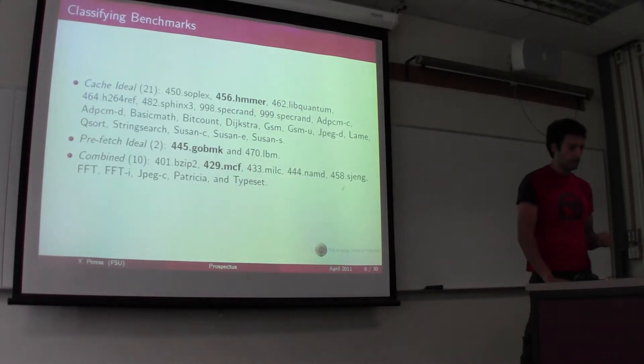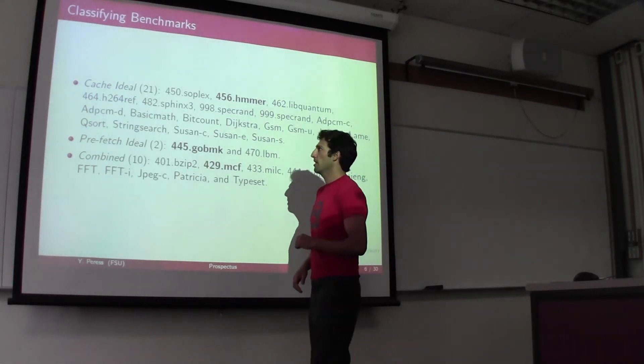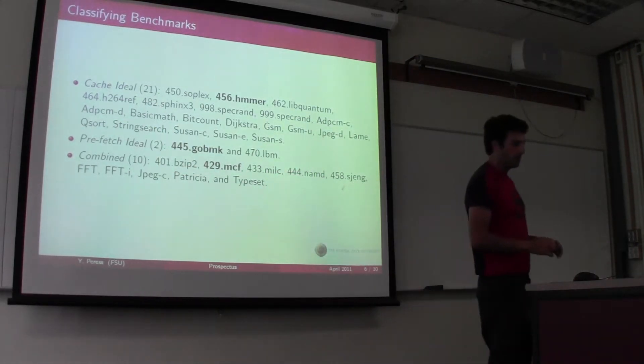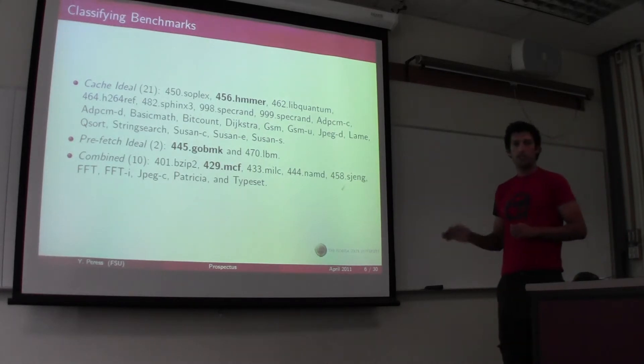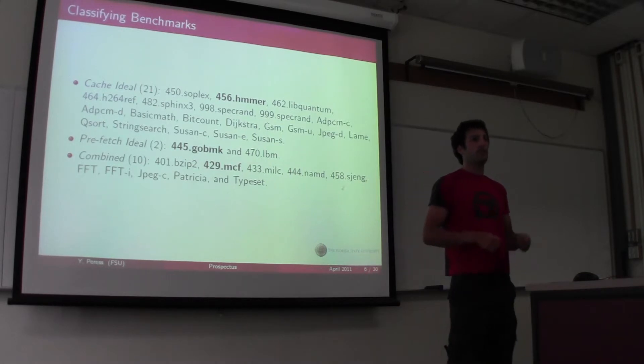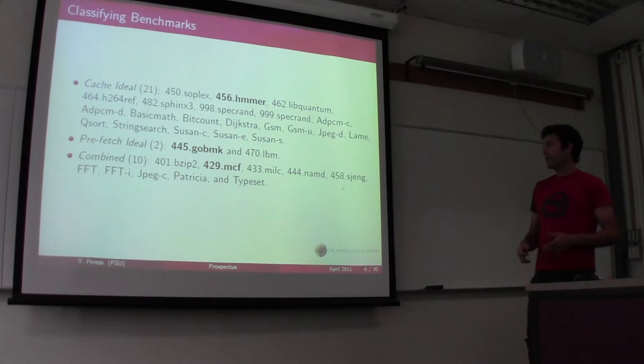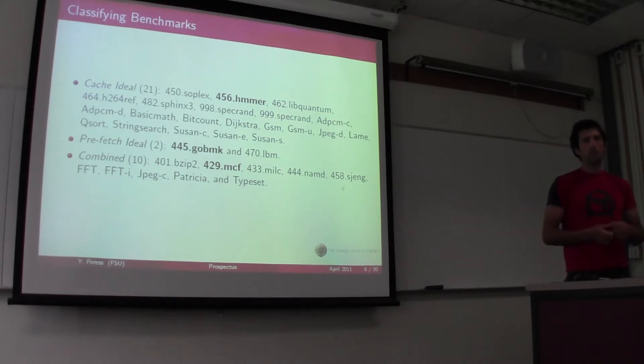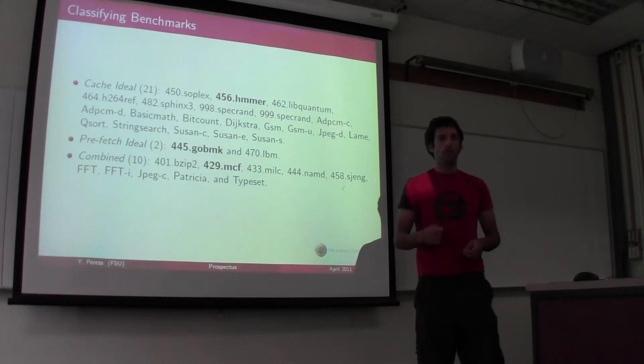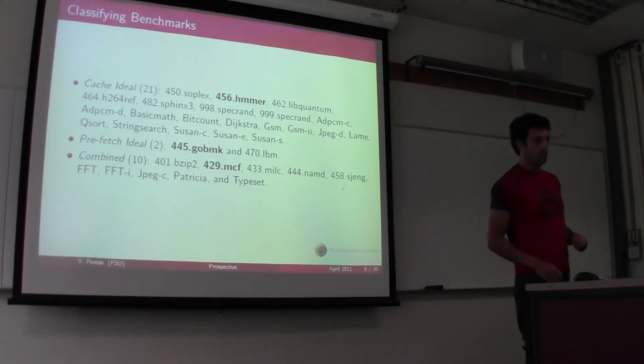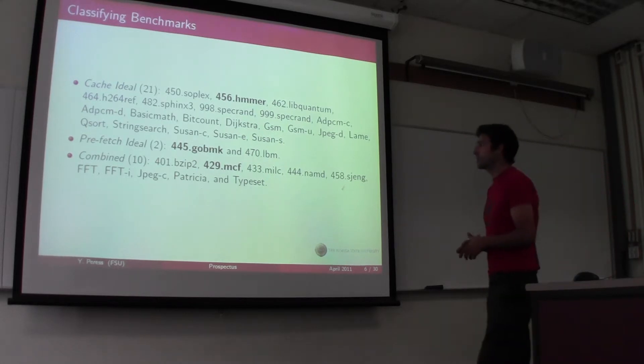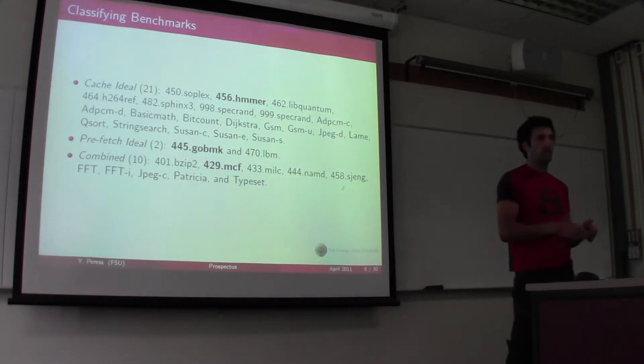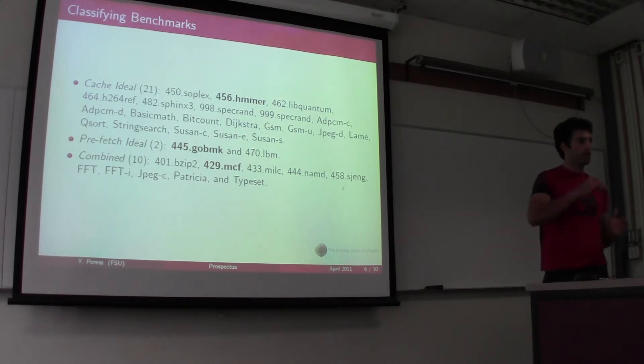Using the benchmarks we saw earlier, we managed to categorize them into three categories. Cache ideal benchmarks are fairly obvious. These are benchmarks that have the ideal behavior to be cached. Prefetch ideal benchmarks are ones that usually iterate through arrays. Any data that's brought into the cache will not stay there for very long because the next piece of data sequentially will be accessed. Combined benchmarks are ones that have behavior from both.